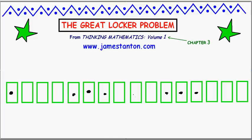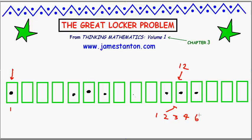So why would it be that the square numbers appear? It's very clear that locker number one is going to be left open — student number one touched locker number one, and no other student thereafter touches locker number one. So let's look at locker number 12. Which students touch locker number 12? Student one touched 12, he touched everything. Student two touched 12. Student three touched 12. Student four touched 12. Student five did not touch locker number 12, because five is not a factor of 12. The next student who touched 12 is student number 6, and then student number 12 itself. So the students whose numbers are factors of 12 are the ones who touched locker 12.